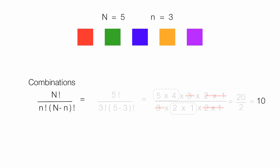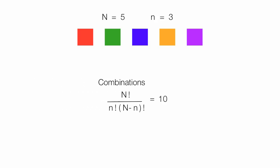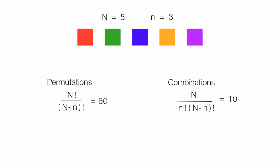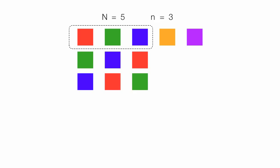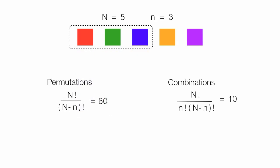It turns out that five objects picking three at a time gives 10 different combinations and 60 permutations. So if I take three objects from the five, I can make six different permutations, but this is only one combination — which is why we have a lot more permutations than combinations. Permutations should always be greater than the number of combinations, with one minor exception: when the number selected is one, permutations and combinations will equal each other.